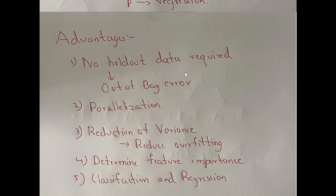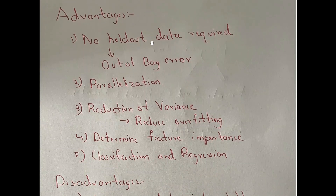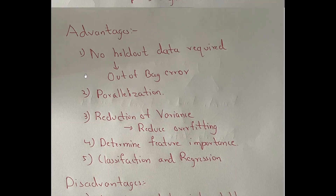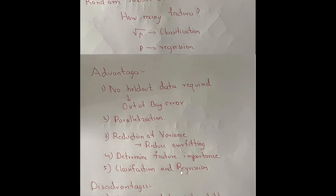What are the advantages? Because of the bagging process, some data is always left out, so you do not require holdout data — you can use the entire training set. You can also do parallelization since different trees are created independently of each other. There is also a reduction of variance and hence reduction of overfitting, since decision trees are prone to overfitting. You can also determine feature importance using random forest, and it can be applied for both classification and regression.